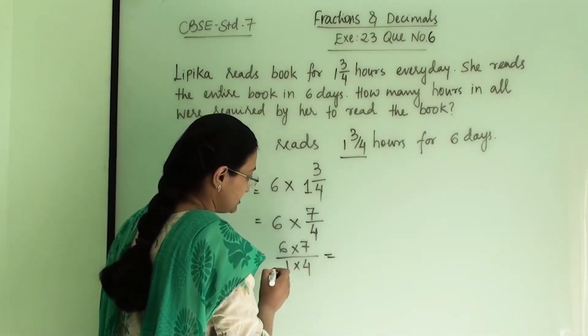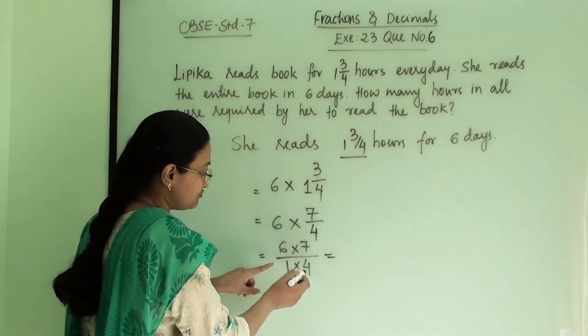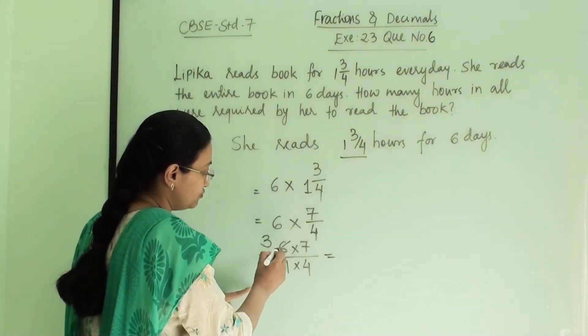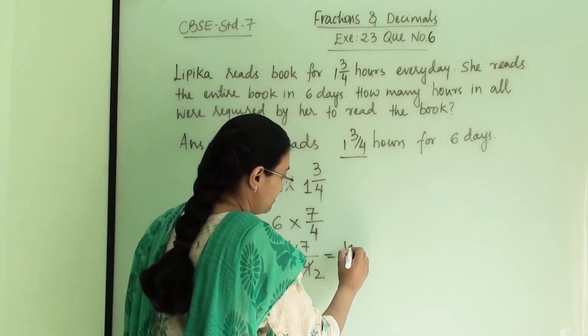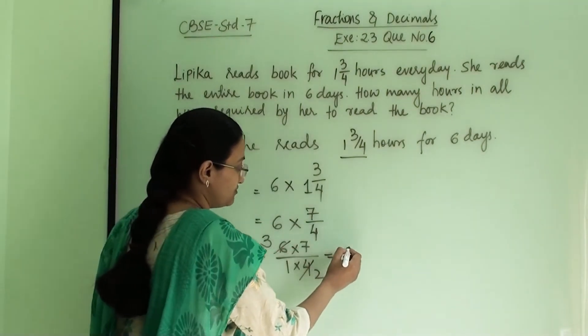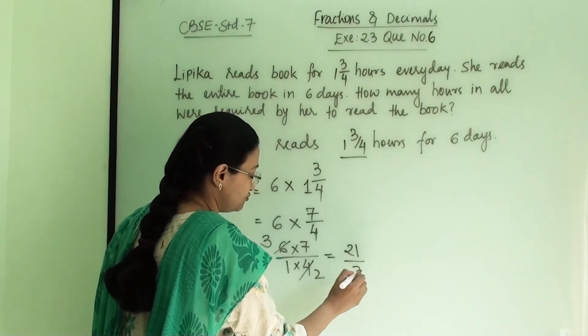So here we will get this. We can reduce it further: 3 times 2 is 6 and 2 times 2 is 4. So here we will get 7 into 3. So it is 21 divided by 2.